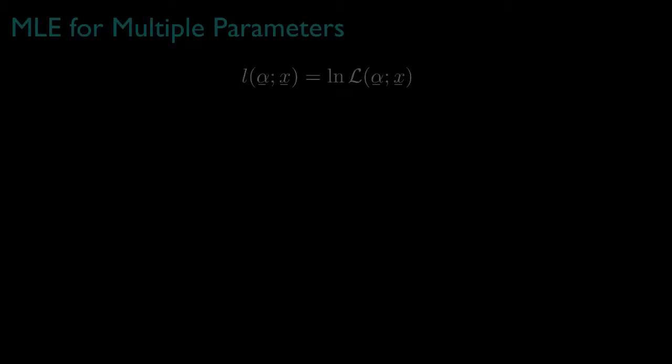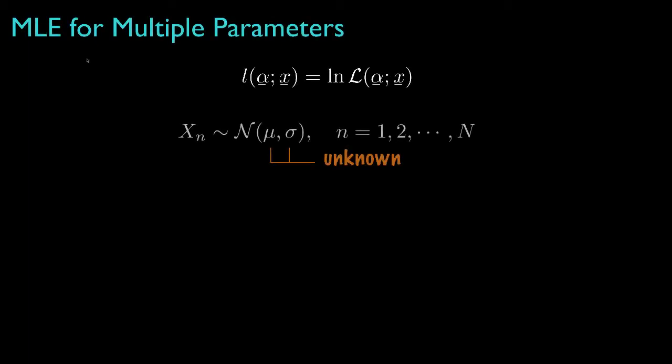For many estimation applications, we're concerned with the estimation of more than one parameter. As an example, suppose that the data are independent, identically distributed samples of a Gaussian random variable with an unknown mean mu and an unknown standard deviation sigma.